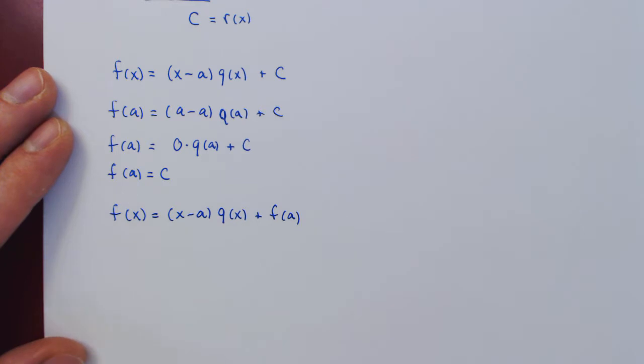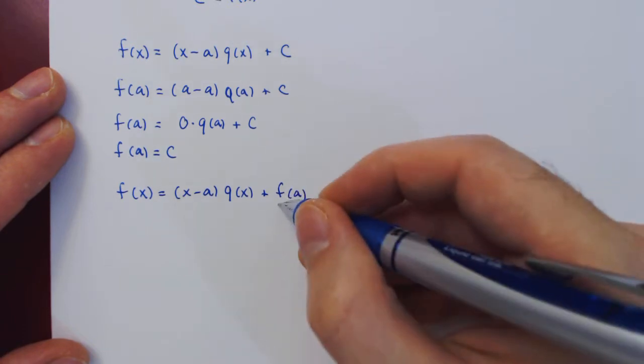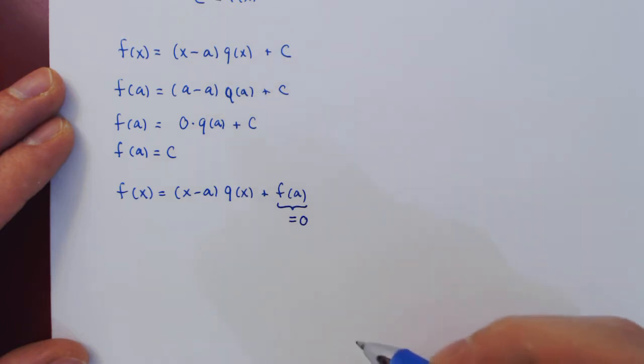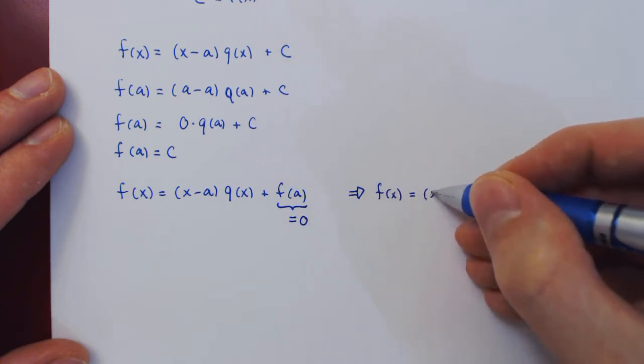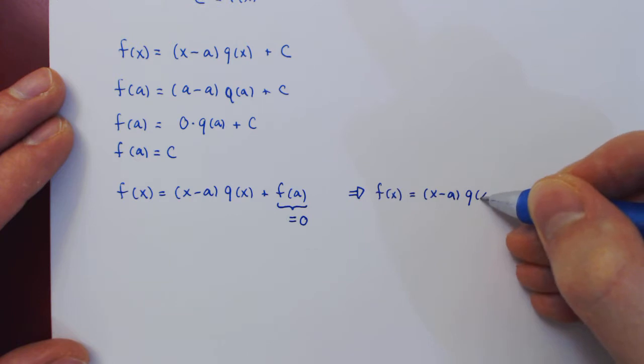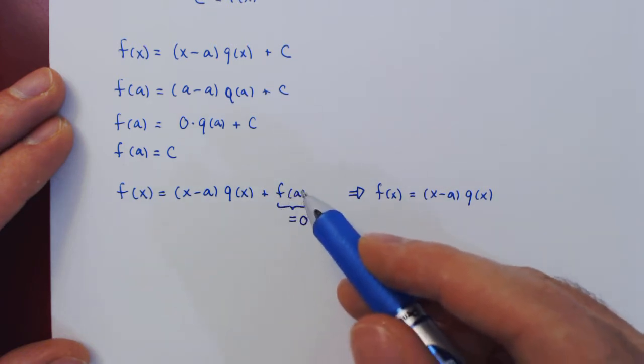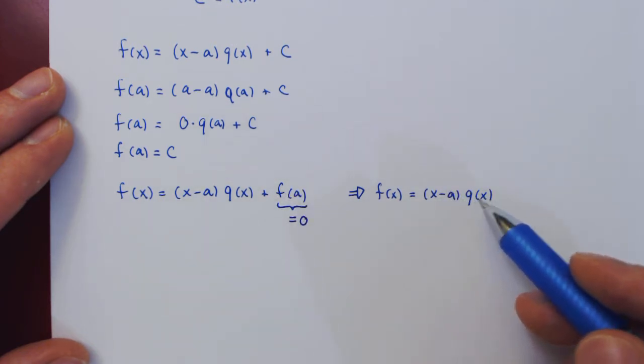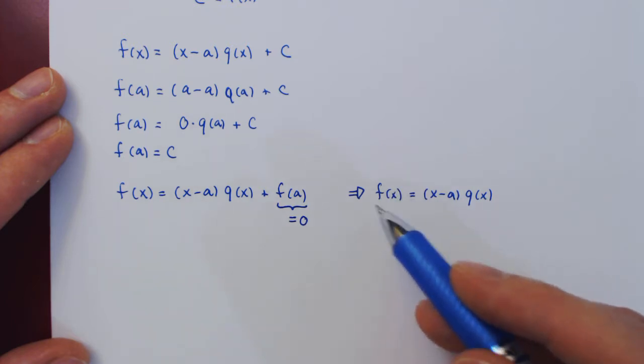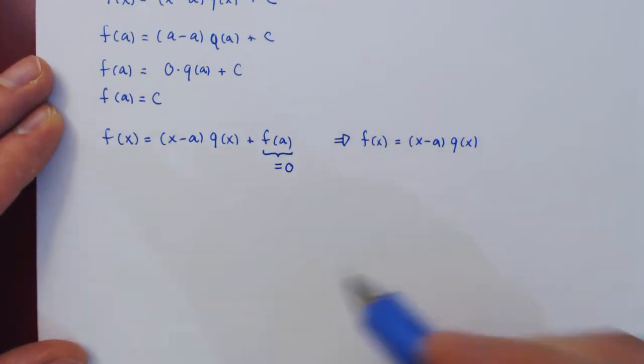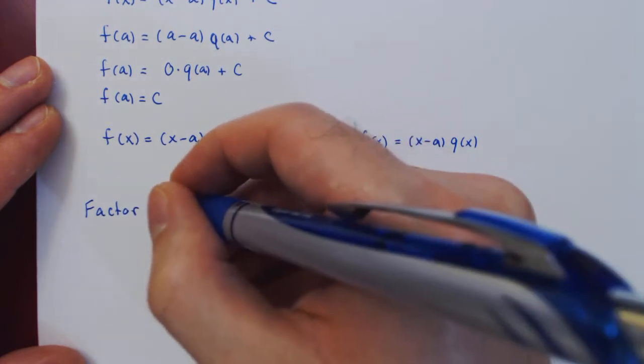And with this we can now easily prove the factor theorem. If f(a) happens to be 0, think of the implication. If this is the case, the implication is that f(x) has to be (x - a) times q(x) plus nothing else, as the remainder is 0. Which means if f(a) is 0, (x - a) times q(x) is f(x). Therefore, x - a is a factor of f(x). And this is exactly the statement of the factor theorem, which sometimes is also called the zero theorem.